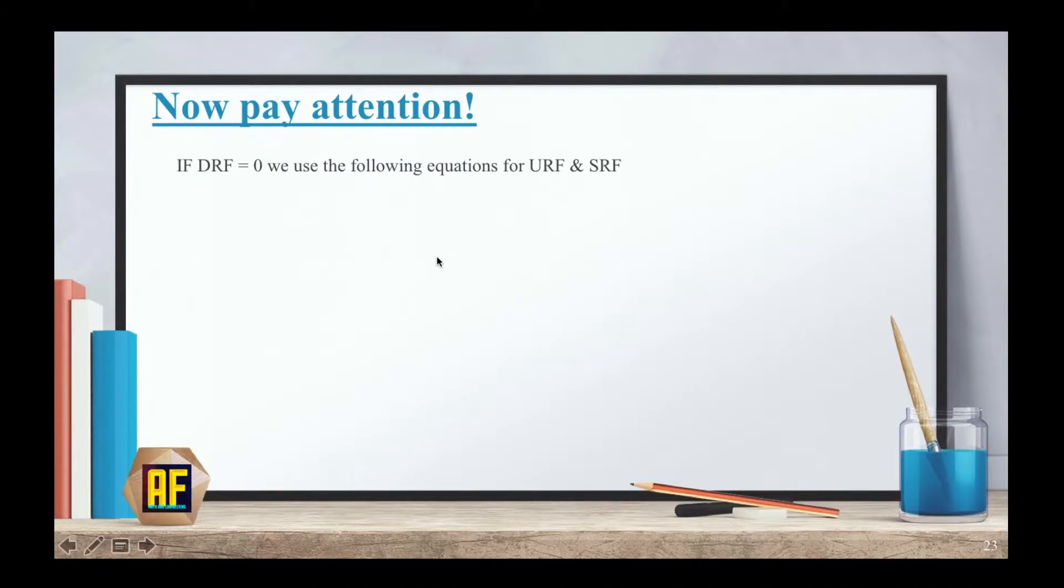Now pay attention. This is the important part. If DRF equals zero, we use the following equations for URF and SRF. URF equals the minimum of LS minus ES or LF minus EF.